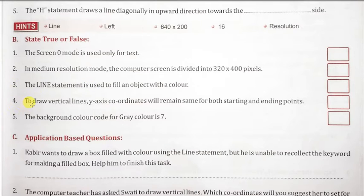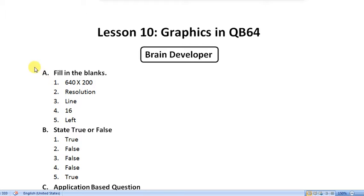To draw vertical lines, y-axis coordinate will remain same. This is false because if you are drawing a vertical line, you have to change the y-axis and keep the x-axis same. Next, the background color code for gray color is 7. This is correct. Here you can see the answers in one screen.